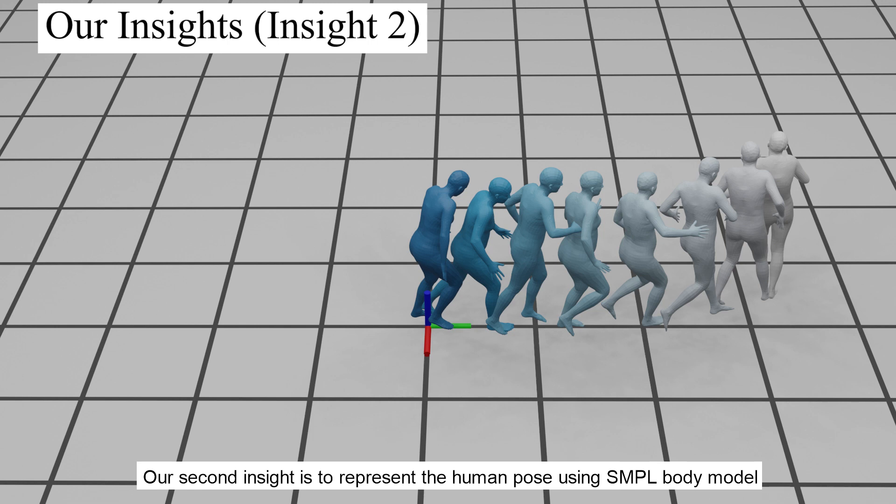Our second insight is to represent the human pose using simple body model, where the human motion is represented as a trajectory of human poses such that the origin is the ground projection of the simple's root joint in the first frame.